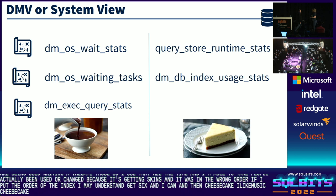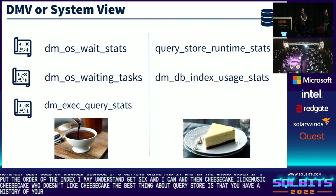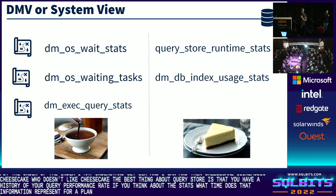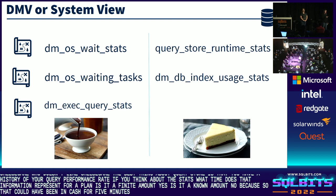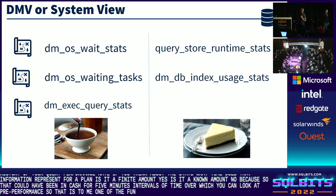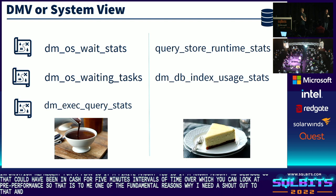Monica just made one of the best cases for Query Store. The best thing about Query Store is that you have a history of your query performance. If you think about DM_EXEC_QUERY_STATS, what time does that information represent for a plan? It depends on how long that plan has been in cache — it could have been in cache for five minutes, five hours, or five days. With Query Store runtime stats, you have intervals of time over which you can look at query performance. That is one of the fundamental reasons why folks need Query Store.